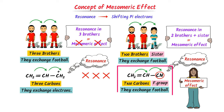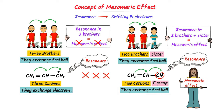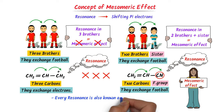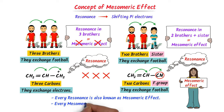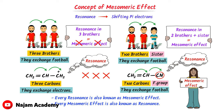Remember that if resonance takes place in the case of a sister — that is, a functional group — this resonance is also known as mesomeric effect. That is why we say that mesomeric effect is the special case of resonance. Every mesomeric effect is also known as resonance.